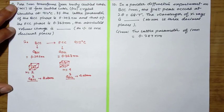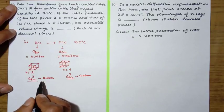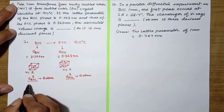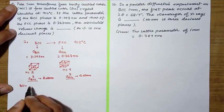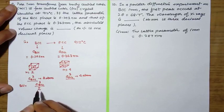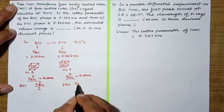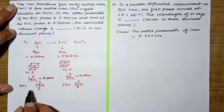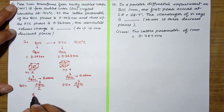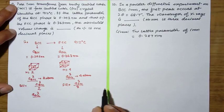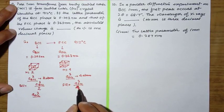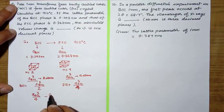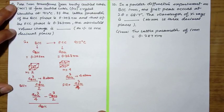The volume per atom in the case of BCC is A_BCC cubed divided by 2, and for FCC it is A_FCC cubed divided by 4. For the percentage change in volume, we calculate: (A_FCC³/4 minus A_BCC³/2) divided by A_BCC³/2, multiplied by 100.